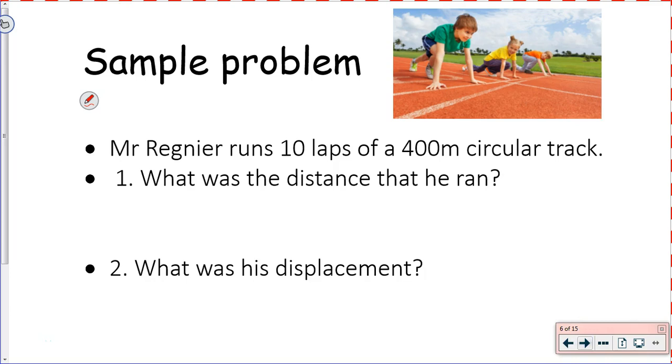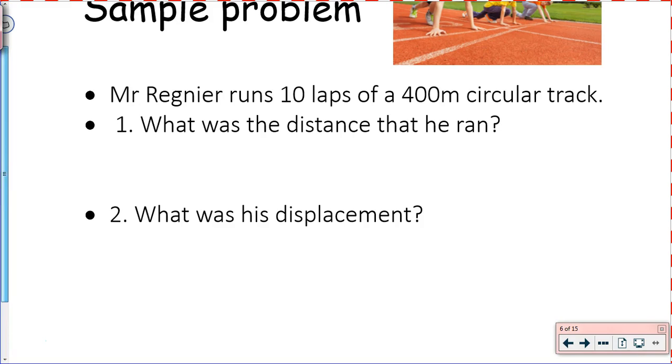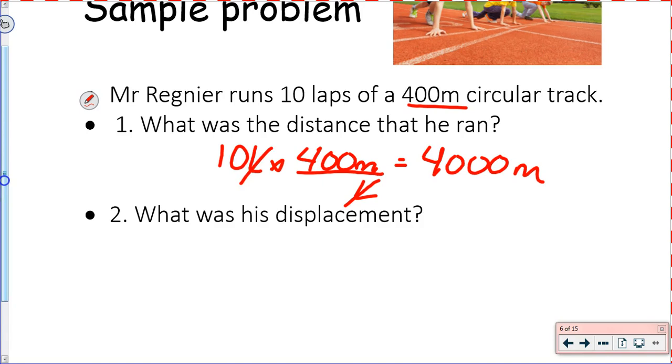Sample problem! Mr. Rainier runs 10 laps of a 400-meter circular track. What was the total distance traveled? So, obviously, this is a pretty straightforward question. We have a 400-meter track. I'm running 10 laps around it. So, the total distance covered, we would end up going 10 times 400 meters to give us an answer of 4,000 meters. If you want to get really fun with units, you can even say that this was 10 laps times 400 meters per lap, and the laps cancel out.